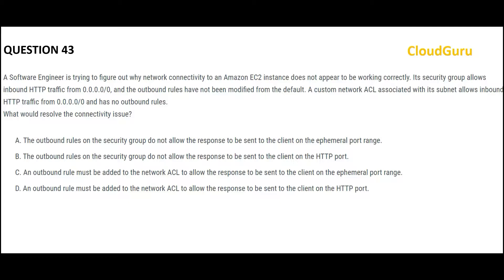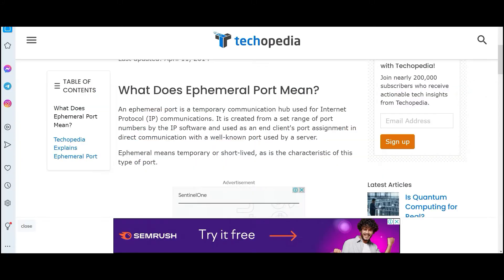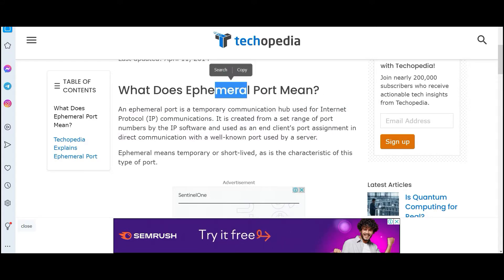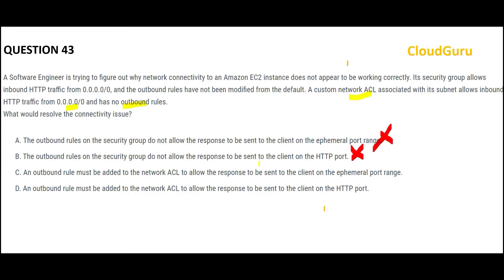This question is about inbound and outbound rules. The pain point is: there is an inbound rule from a certain IP but no outbound rule. We need to add an outbound rule, and since the question is talking about network ACL, we should add it in the network ACL. Options A and B are wrong because they are not talking about network ACL. Between C and D — this is about ephemeral ports. Ephemeral means temporary or short-lived. We use ephemeral ports because we will not be restricted to a certain port range like HTTP. Ephemeral ports allow a wide range, and that is our solution — that is my final answer.